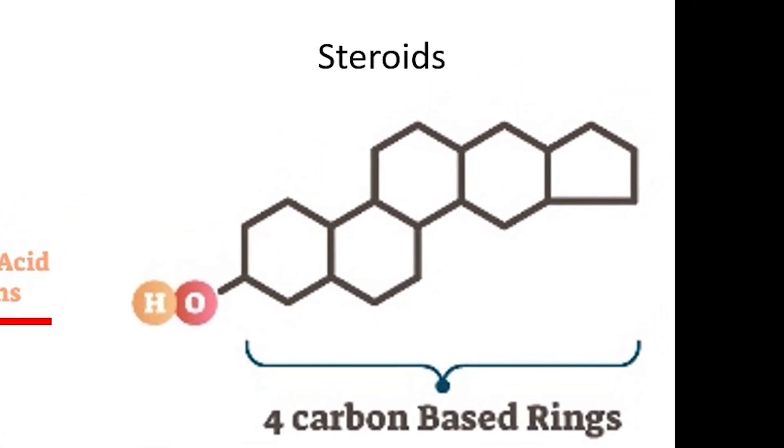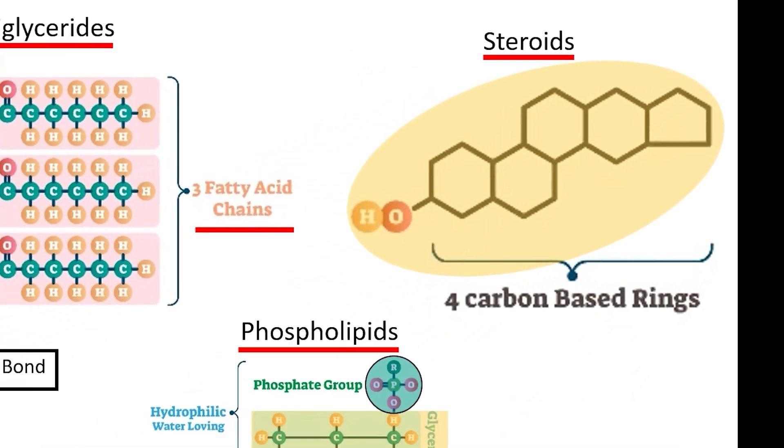Fatty acids can also create molecules like steroids and waxes, which serve a number of purposes in both plants and animals. Steroids, unlike other lipids, are formed into complex ring structures that can activate specific protein receptors in different cells. Steroids act as hormones in your body, telling specific cells to carry out actions that the body needs to survive.